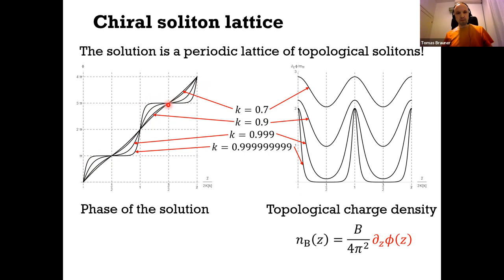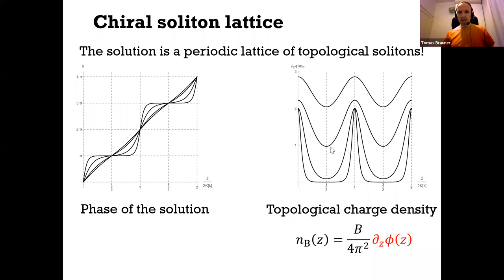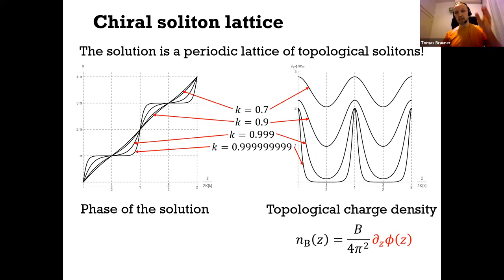An interesting quantity is the gradient of these solutions. The term μ · B · ∇φ / (4π²) in the Hamiltonian means that B · ∇φ / (4π²) has the physical interpretation as a baryon number density. For solutions with plateau-then-swing structure, you find peaks in baryon number density separated by regions with basically no baryon number. You can think of such solutions as a stack of domain walls. To determine which is the ground state, you evaluate the energy: the optimal elliptic modulus k is implicitly determined by the relation E(k) = (a simple combination of μ and B), where E is the complete elliptic integral of the second kind.